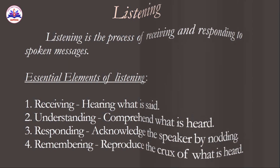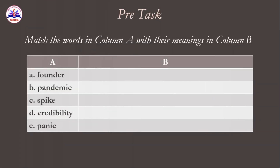This passage is the pre-task. In the pre-task, there are five words for matching. The first word is 'Founder' — someone who starts a business or organization.